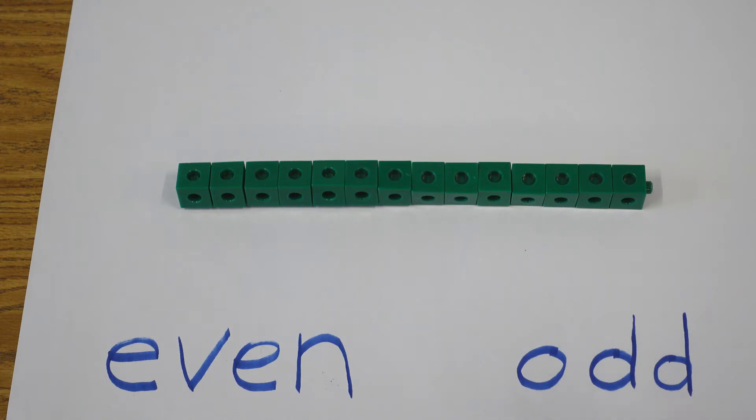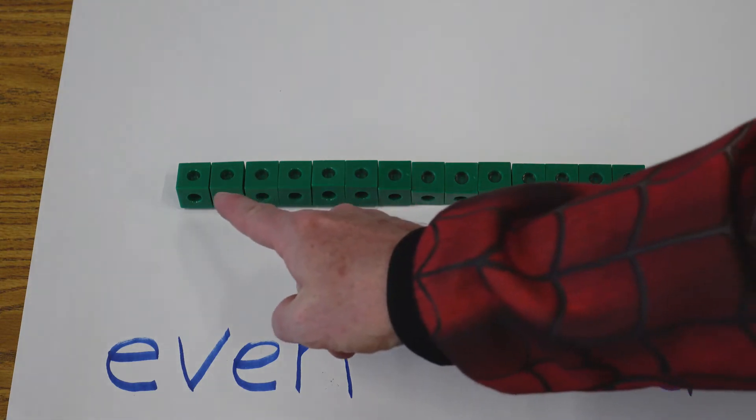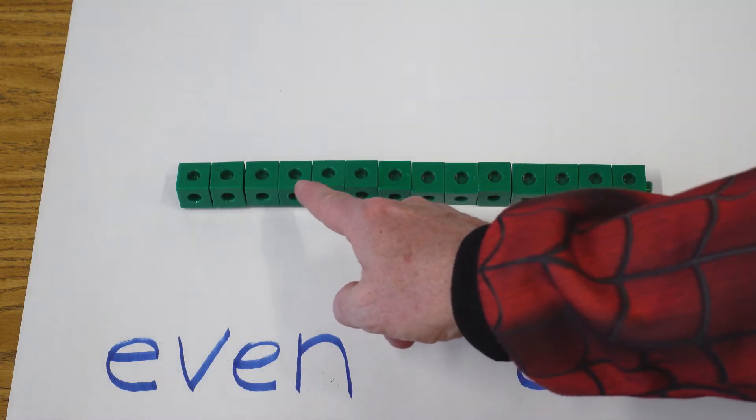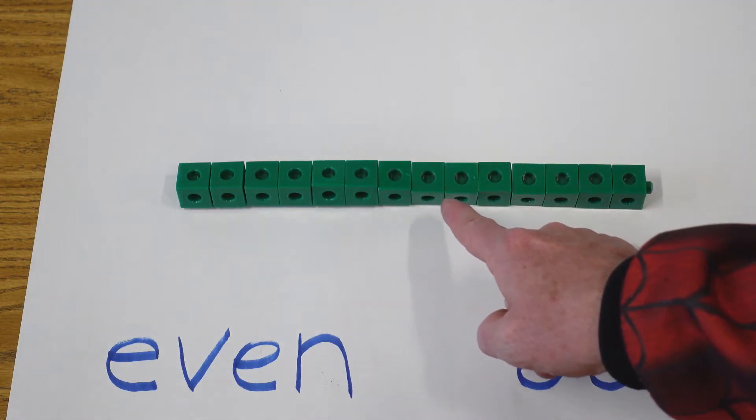Okay, we have another group of blocks. Can you tell me if this is an even or odd number? Let's count those first. We have 1, 2, 3, 4, 5, 6, 7, 8, 9, 10.